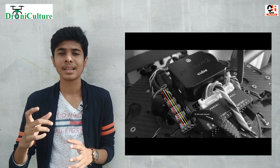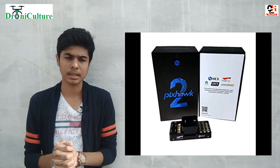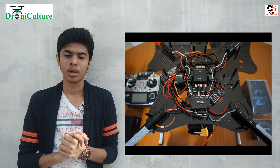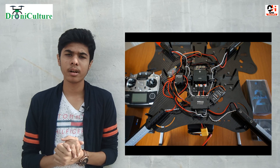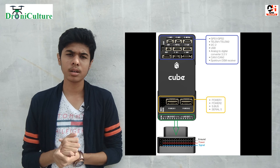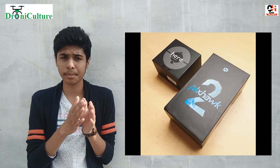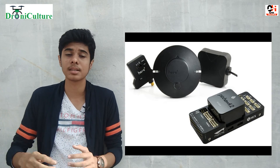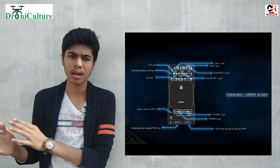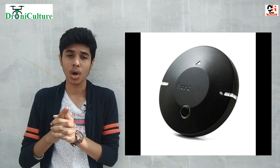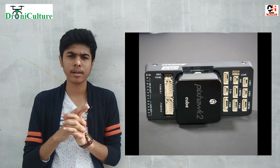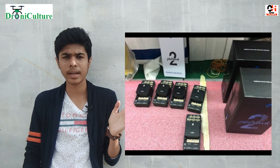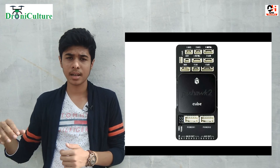So the main feature — first of all, why is it called Pixhawk Cube or Pixhawk 2.1? If you look at the flight controller board, you will get a cube shape and IMU. Many people call it Pixhawk Cube or by the name Pixhawk 2.1. Basically, the Pixhawk Cube is comparable to the DJI A3AG flight controller board, which costs about 60,000 to 70,000 rupees. The Pixhawk Cube is about 20,000 to 25,000 rupees. So you can compare the features with the price.